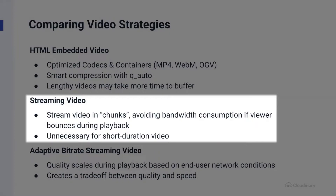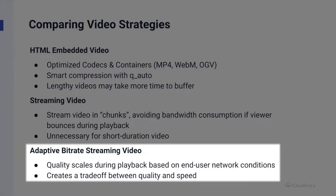To push streaming a step further, we can turn to adaptive bitrate streaming. This allows quality to scale up or down based off of network conditions that are available to your users at the time of playback. However, it does create a trade-off between quality and speed for your users if their network conditions happen to take a turn during playback.